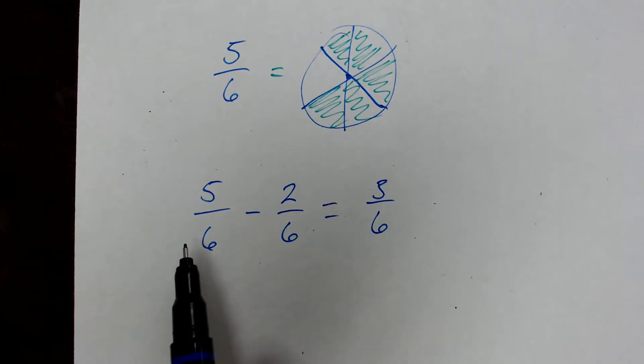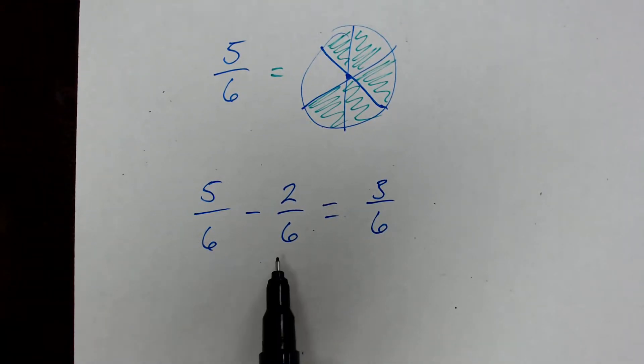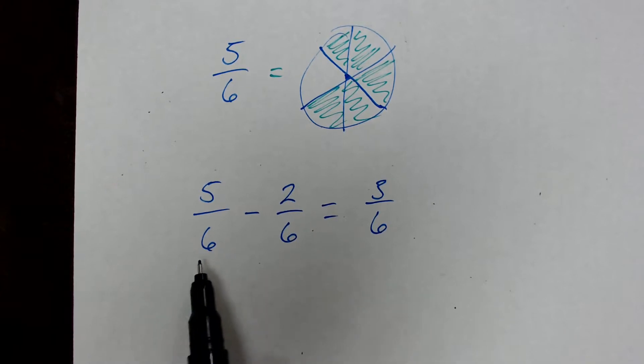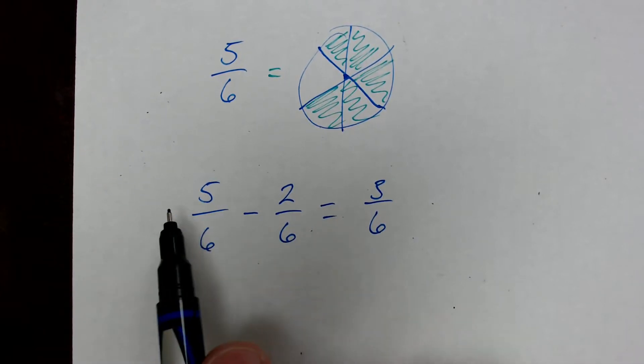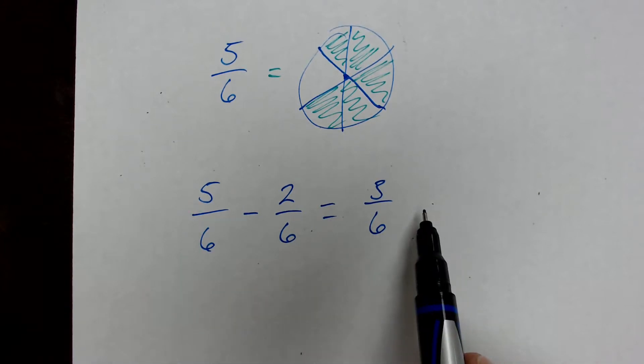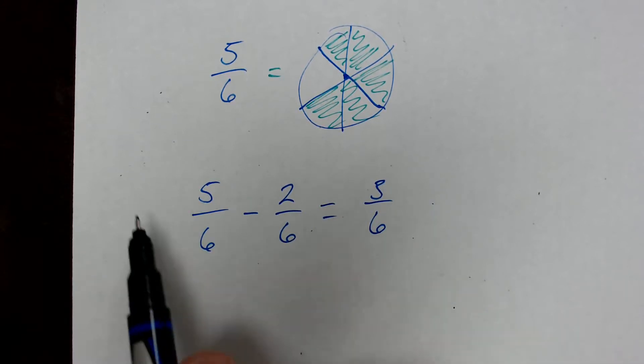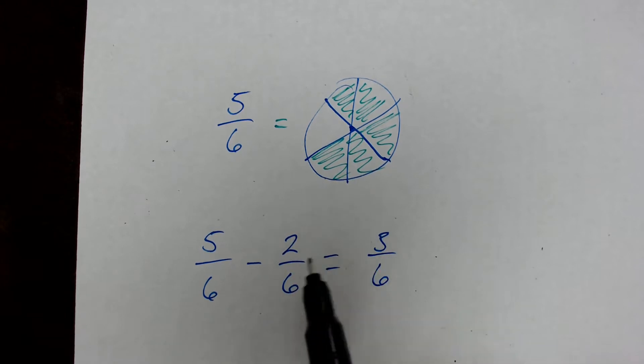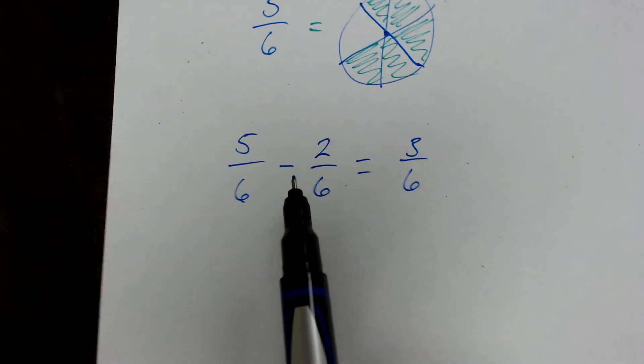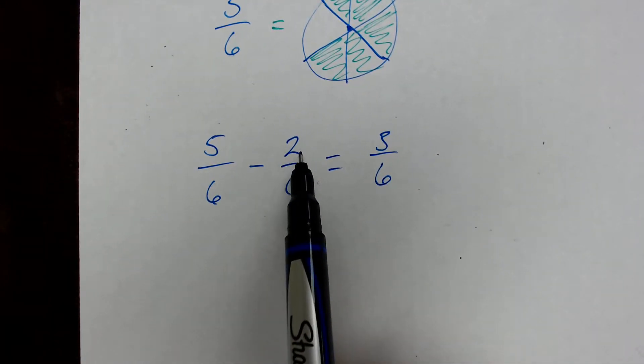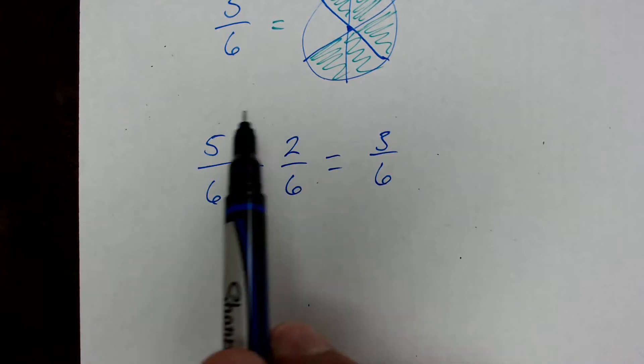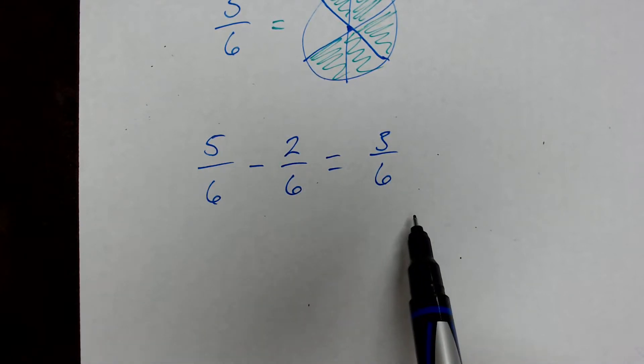So what you see here is when we're adding or subtracting fractions with the same denominator or same bottom number, the bottom number doesn't change. We don't subtract six from six. All we do is we subtract the top numbers, right? And that's the rule here, right? So if the drawings are a little hard for you to understand, just remember the rule that when you're adding or subtracting fractions, you only change the numerator. The denominator will never change.